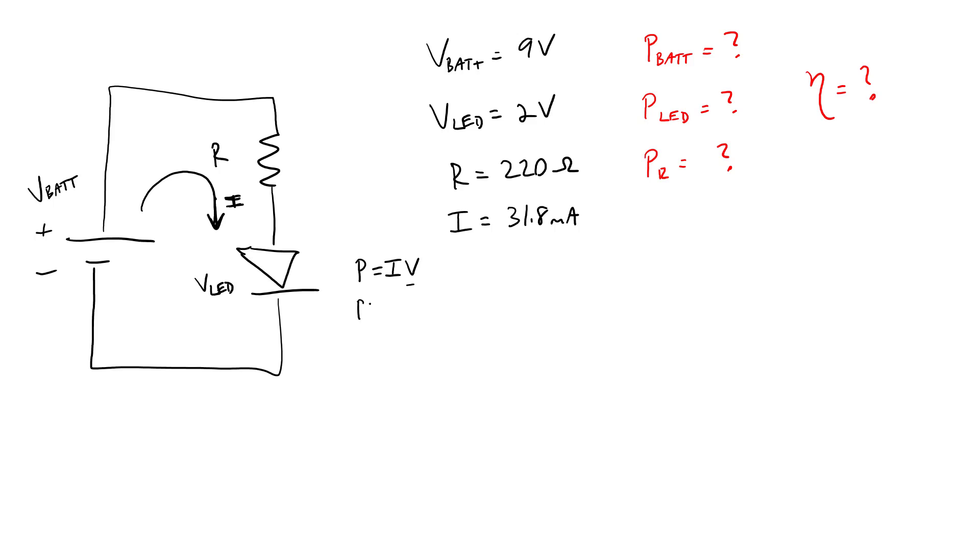Calculating that first for the battery, we have P equals IV equals the current 31.8 milliamps. I'm going to rewrite that as amps when doing the calculations, so 0.0318 amps times the voltage of the battery, which is 9 volts. That gives a power supplied to the circuit by the battery of 0.2862 watts or 286.2 milliwatts.